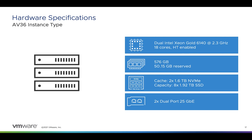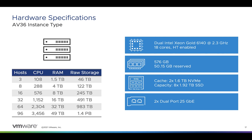With two of those NICs provisioned for ESXi system traffic and two provisioned for workload traffic. A typical three-host starter cluster will get you 108 CPUs, 1.5 TB of RAM, and 46 TB of raw storage capacity.